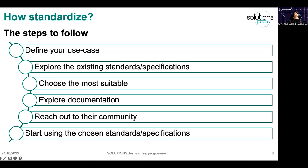Now, how to standardize — this is a list of steps you can use for things way bigger than mobility services. First, define your use case: what are the problems that you are trying to solve? Then, based on this definition, start exploring what exists — the different standards, specifications, and solutions. Read about them, and then choose the one that is the most suitable to your problem. It can be more than one standard or specification depending on the complexity of your use case.